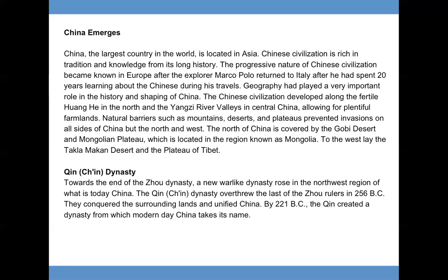Qin Dynasty. Towards the end of the Zhou Dynasty, a new warlike dynasty rose in the northwest region of what is today China. The Qin Dynasty overthrew the last of the Zhou rulers in 256 BC, conquered the surrounding lands, and unified China. By 221 BC, the Qin created a dynasty from which modern-day China takes its name.